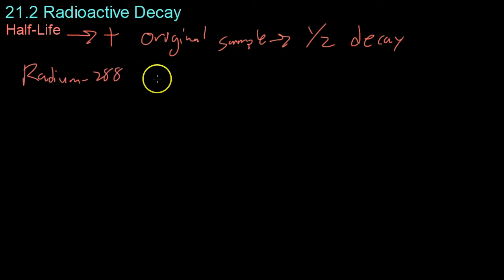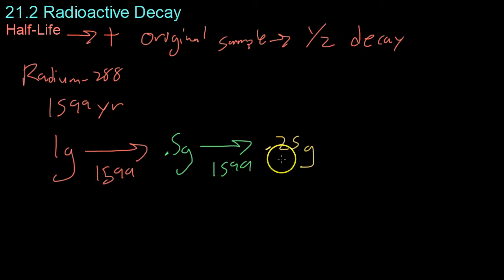Moving on now to the concept of half-life. Half-life is the time required to go from your original sample of some isotope and have half of it decay away. For example, radium-288 has a half-life of 1,599 years, which means that if you start with one gram today, 1,599 years from now, you will have half a gram. And then, 1,599 years from then, you'll have a quarter of a gram, and so on until you have decayed away the vast majority of your sample.